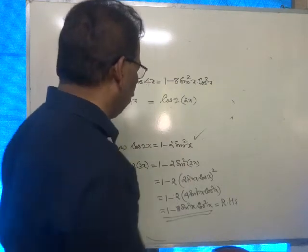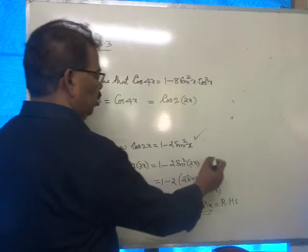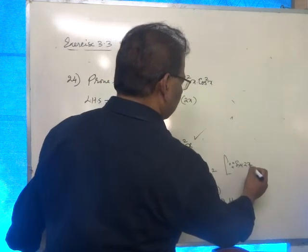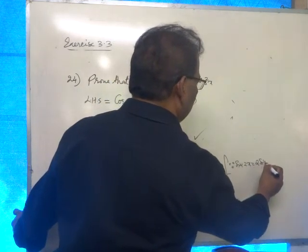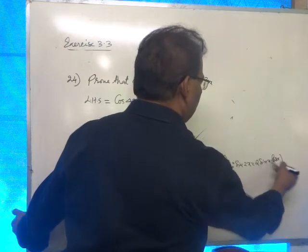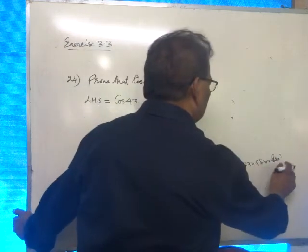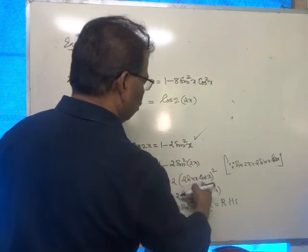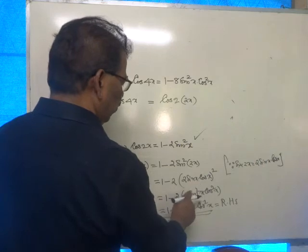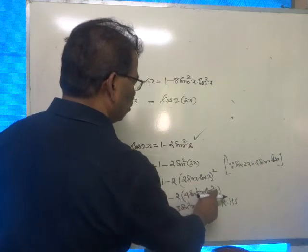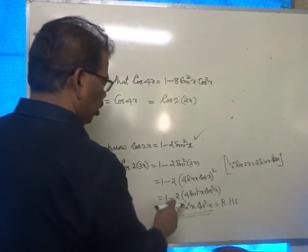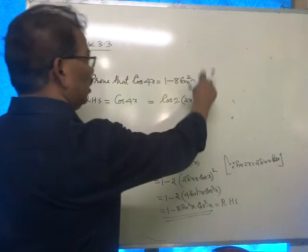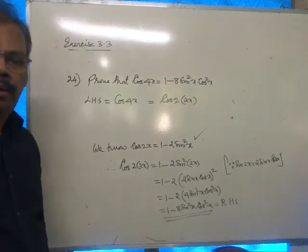That is 1 minus 2 into — sin 2x is equal to 2 sin x cos x. Therefore, 2 sin squared 2x is equal to 2 sin x cos x, all squared, which is 4 sin squared x cos squared x. So 1 minus 2 into 4 sin squared x cos squared x becomes 1 minus 8 sin squared x cos squared x, which is the right hand side. Great.